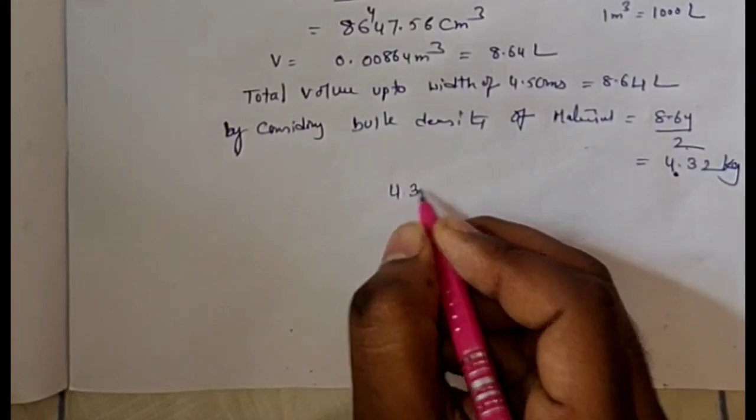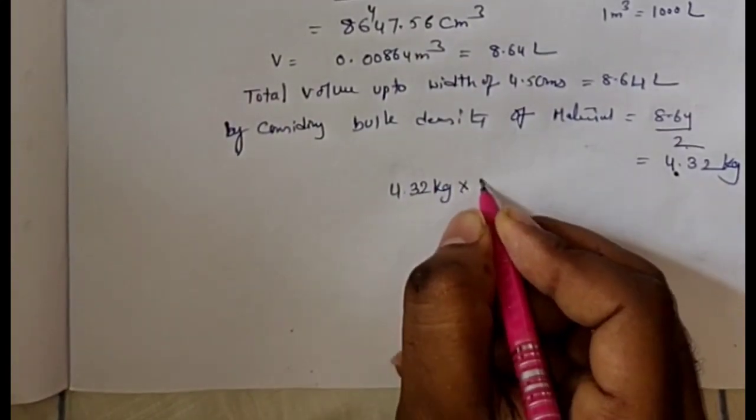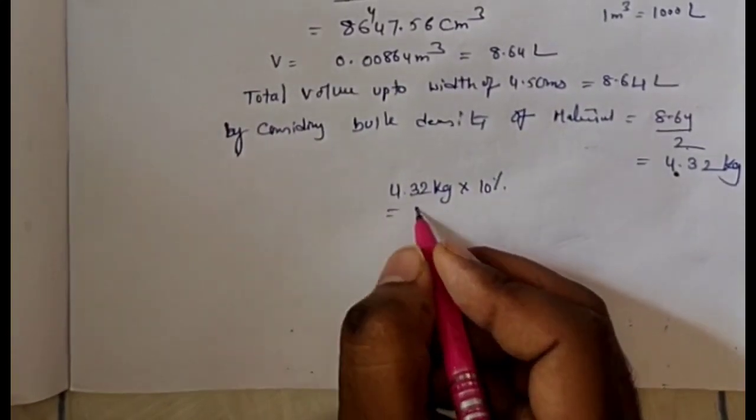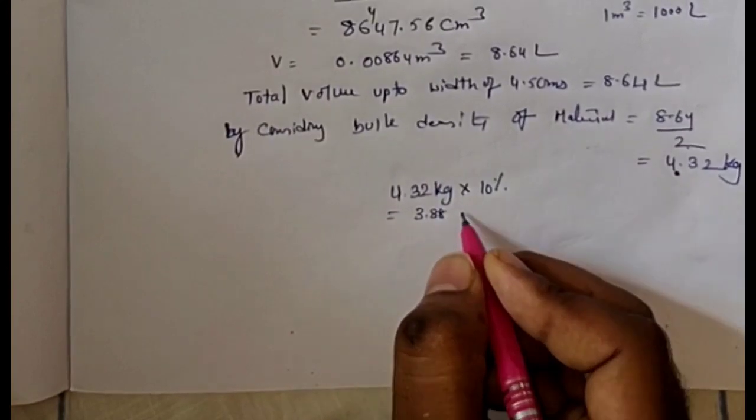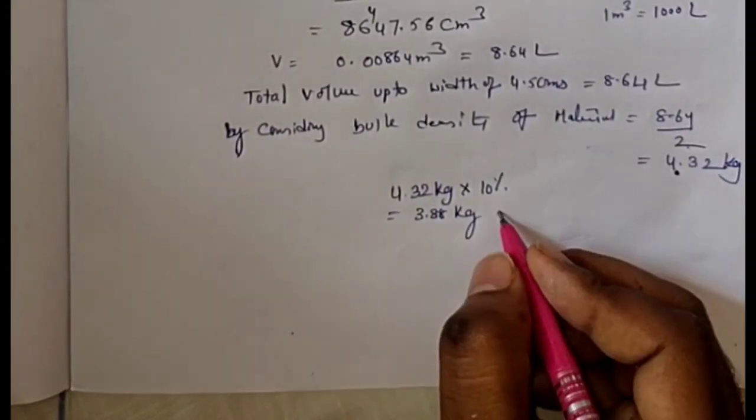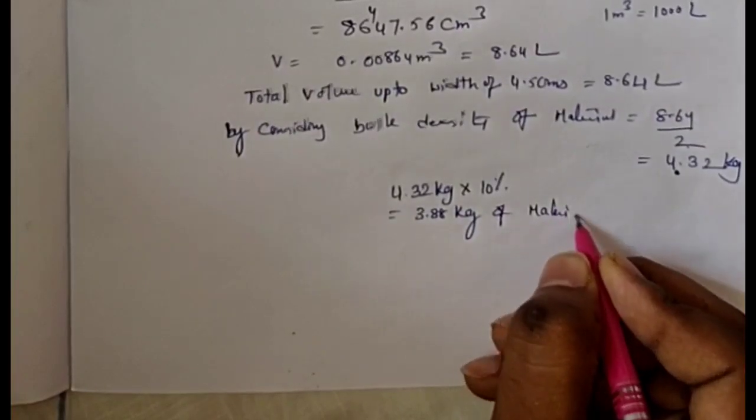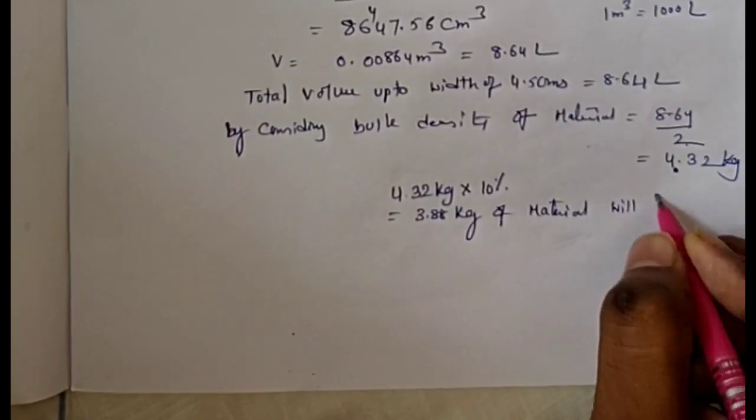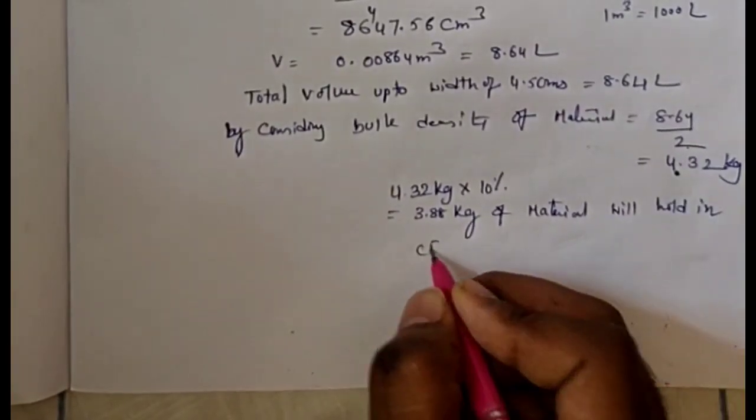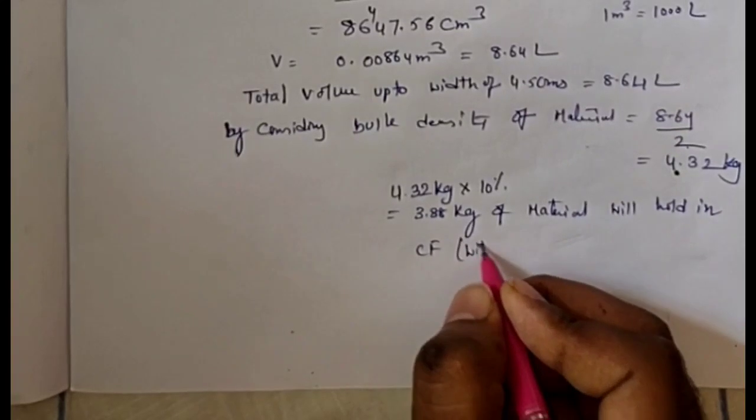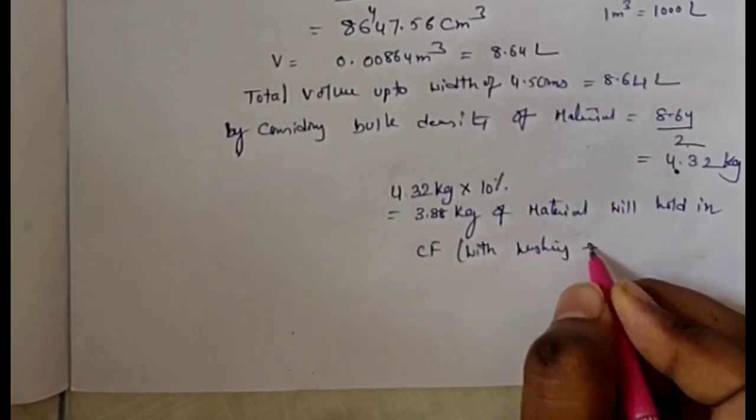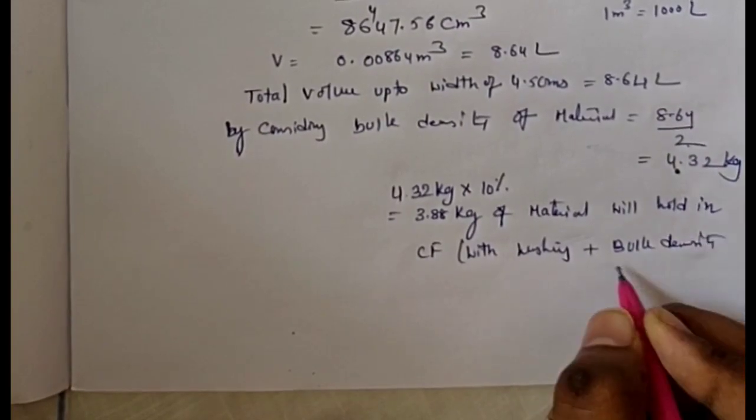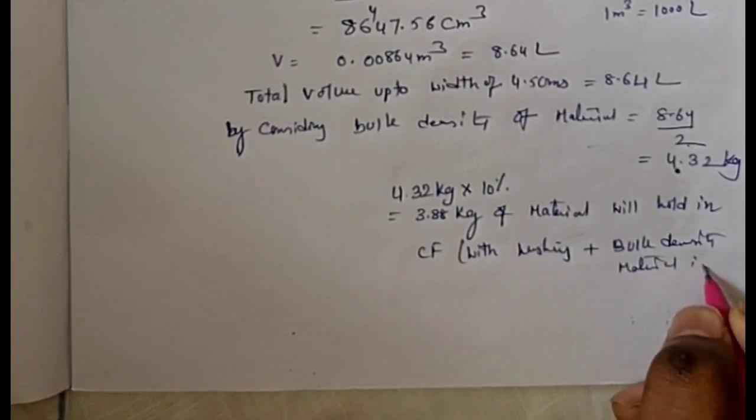You have to calculate all these things. You will get 3.8 kg of material that will hold in the centrifuge with washing, plus bulk density of material is 0.5.